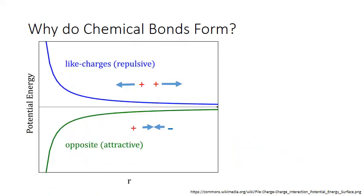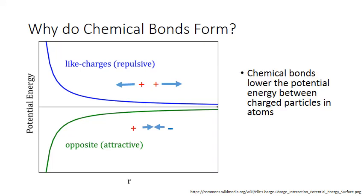Regardless of whether electrons are transferred or shared, any type of chemical bond forms for one reason: because the new arrangement of electrons lowers the overall potential energy between the charged particles and the atoms involved.